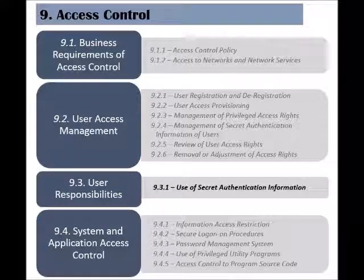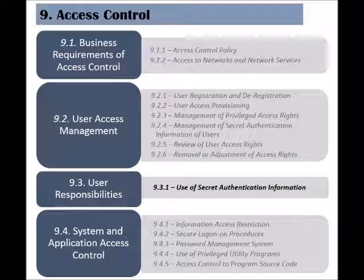The third category of the Access Control clause is called User Responsibilities, and is concerned with users being responsible for the security of their authentication information. This category has only one control, called Use of Secret Authentication Information.